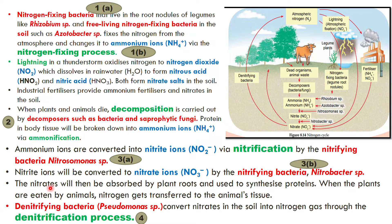Nitrates are then absorbed by plant roots, and plants use them to synthesize proteins. When plants are eaten by animals, the animals also obtain nitrogen this way. Group 4 of microorganisms are the denitrifying bacteria — Pseudomonas species — which convert nitrates in the soil back to nitrogen gas through the denitrification process.